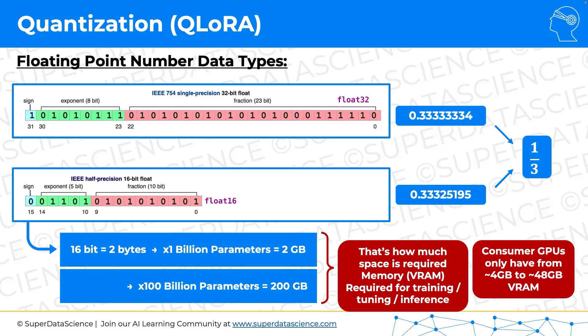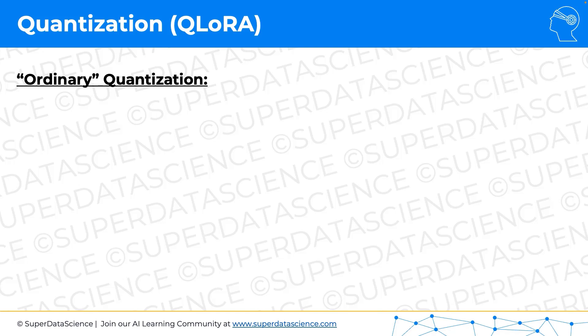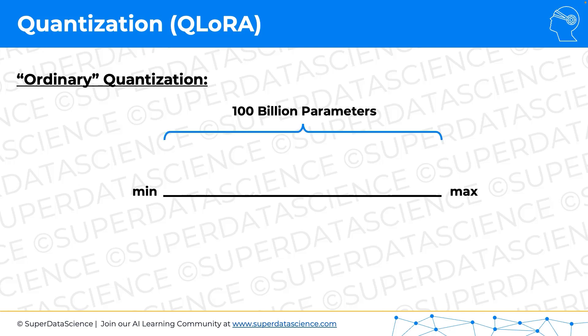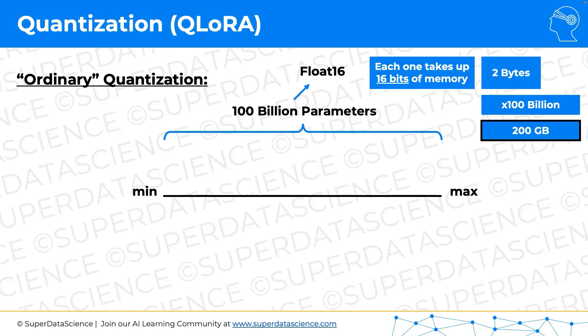We will use quantization. First we'll talk about ordinary quantization, and then we'll talk about QLORA quantization. Quantization is a method to transform a continuous number into discrete numbers. For example, if we have our weights distributed somewhere between the maximum — there are 100 billion weights, also called 100 billion parameters — and if we're using float16, then each one is 16 bits, and that ends up being 200 gigabytes of space.